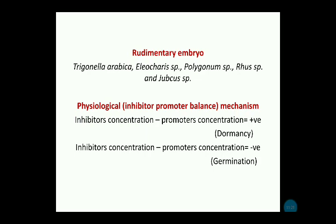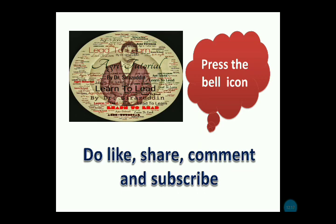Another endogenous factor is the physiological mechanism involving inhibitor-promoter balance. Always remember: if the difference between inhibitor concentration and promoter concentration in a weed seed is positive — meaning inhibitor concentration is higher than promoter concentration — then the seed will be in a dormant condition. Conversely, if inhibitor concentration is low and promoter concentration is high, the difference is negative, and germination will occur.